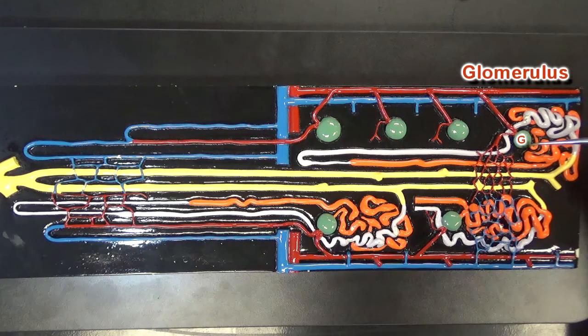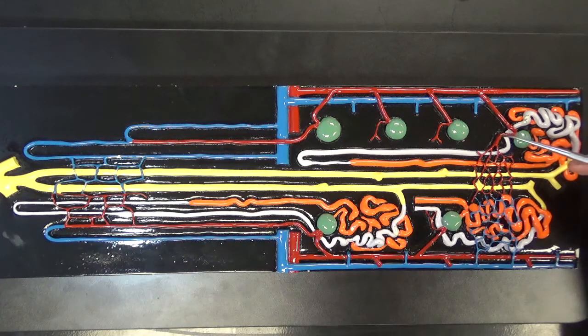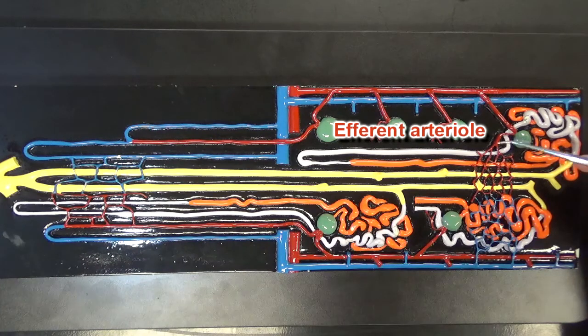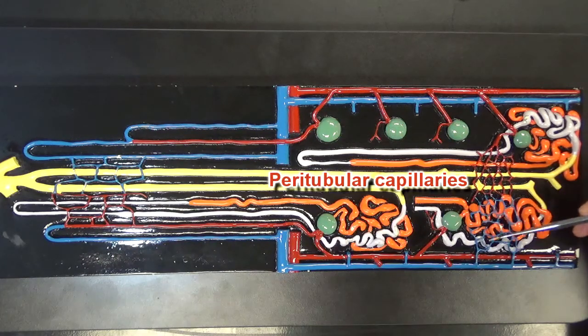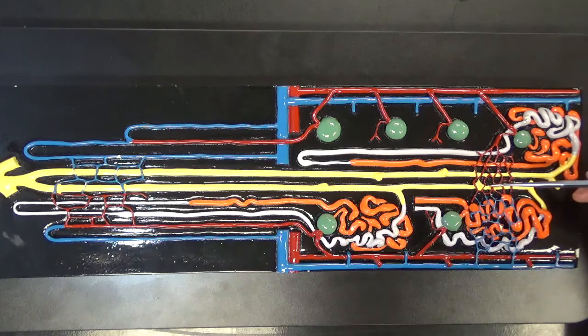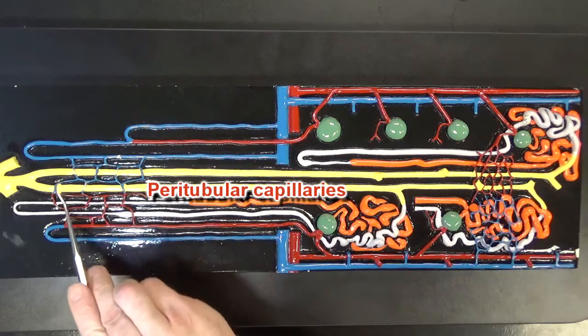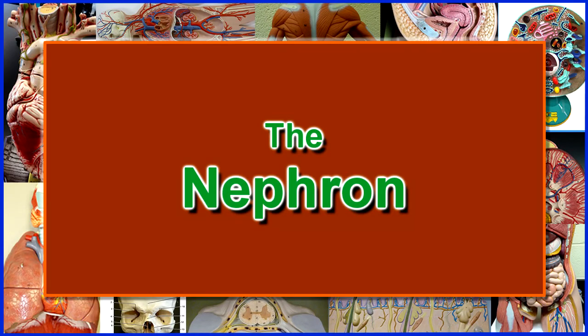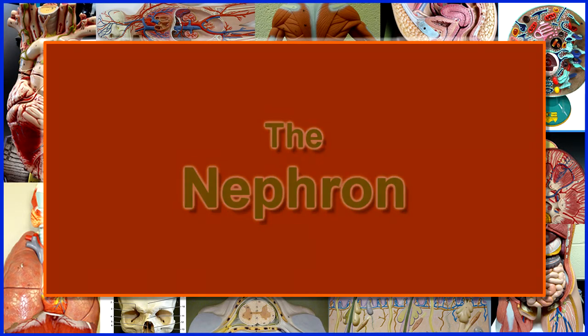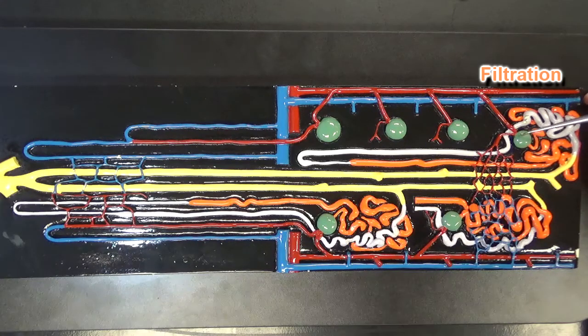This little blood vessel right here is the efferent arteriole and that's going to lead to peritubular capillaries over here. You can also see peritubular capillaries down here as well.